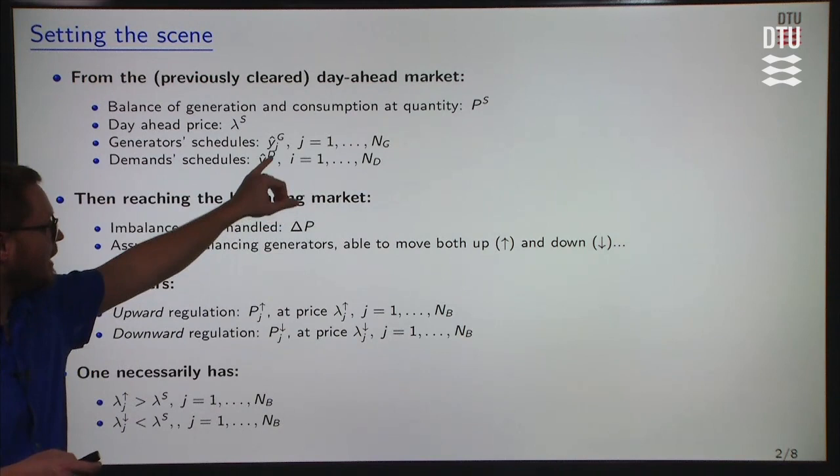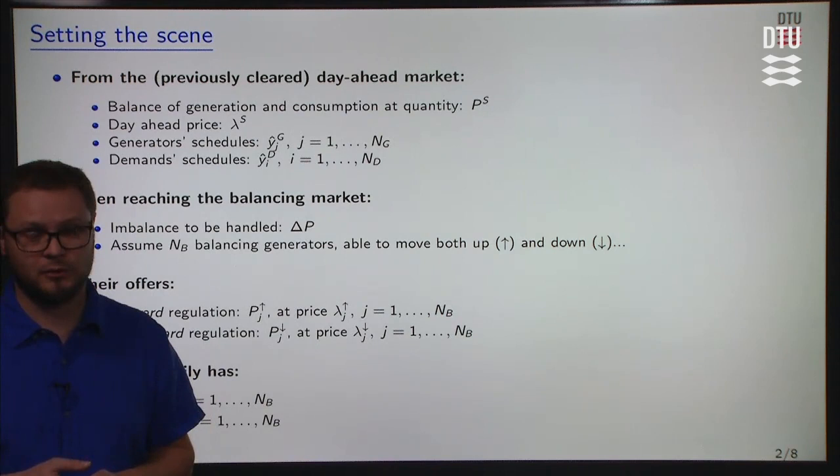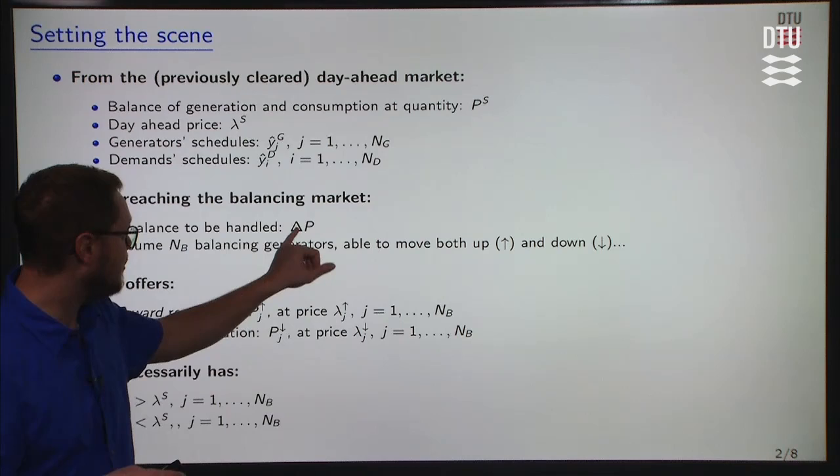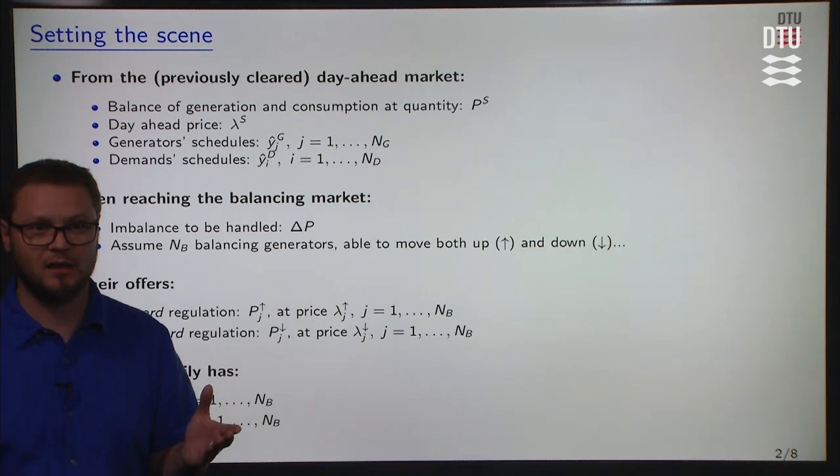Now we are reaching the balancing market. As explained in the previous block, there might be an imbalance to be handled, and we'll look at the overall imbalance for the system and denote it by delta p. It is the role of the system operator to counteract this imbalance to make sure we keep the equilibrium in the system with supply equal to demand.